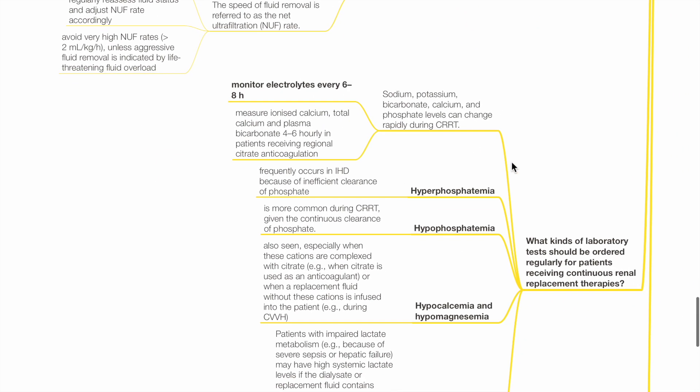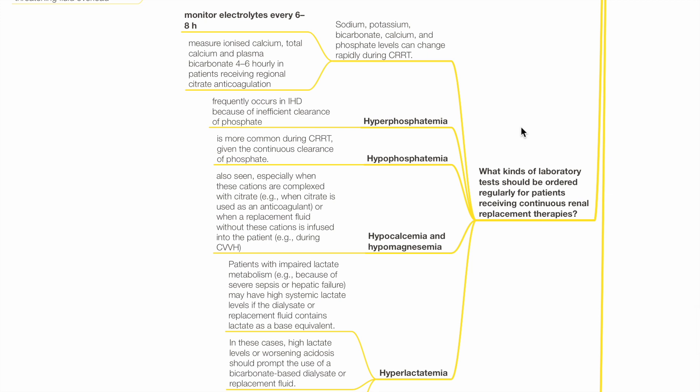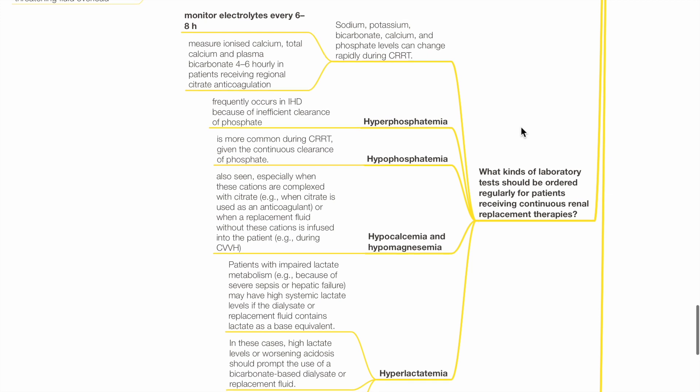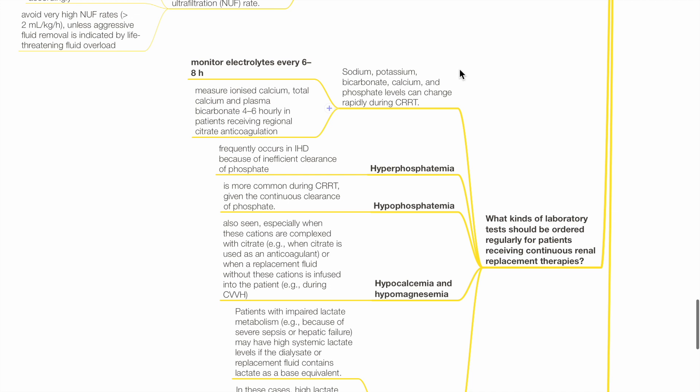What kinds of lab tests should be ordered regularly for patients receiving CRRT? Sodium, potassium, bicarbonate, calcium and phosphate levels can change rapidly during CRRT. Monitor every 6 to 8 hourly.